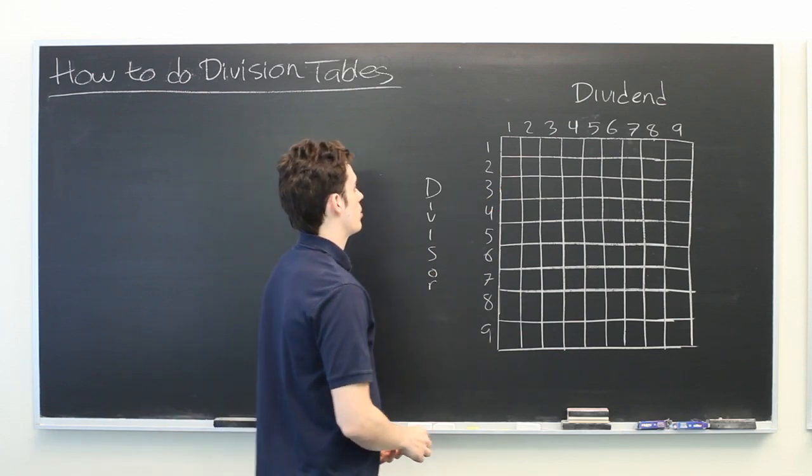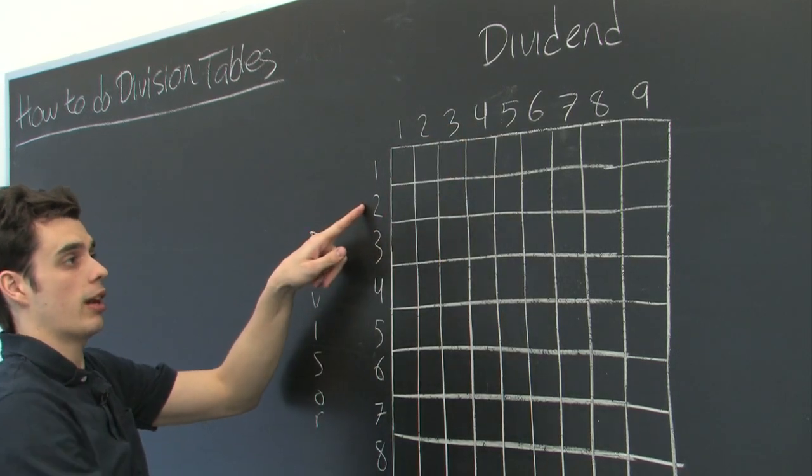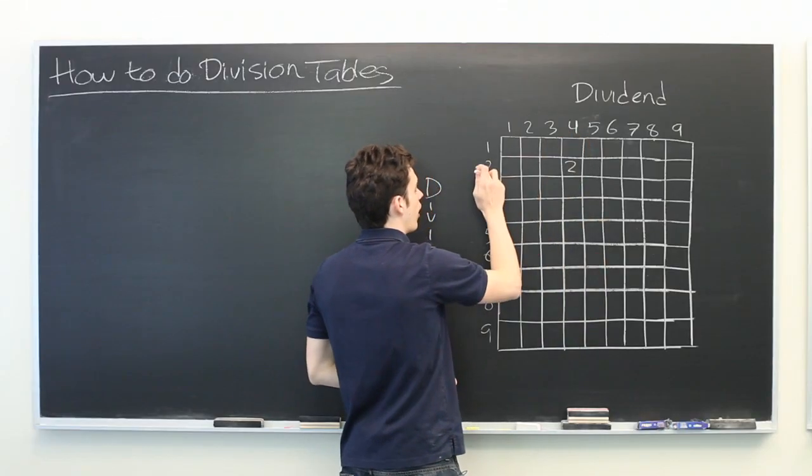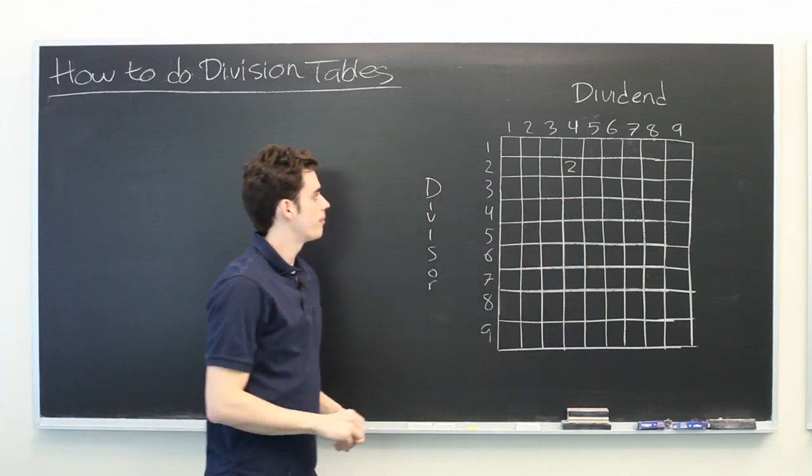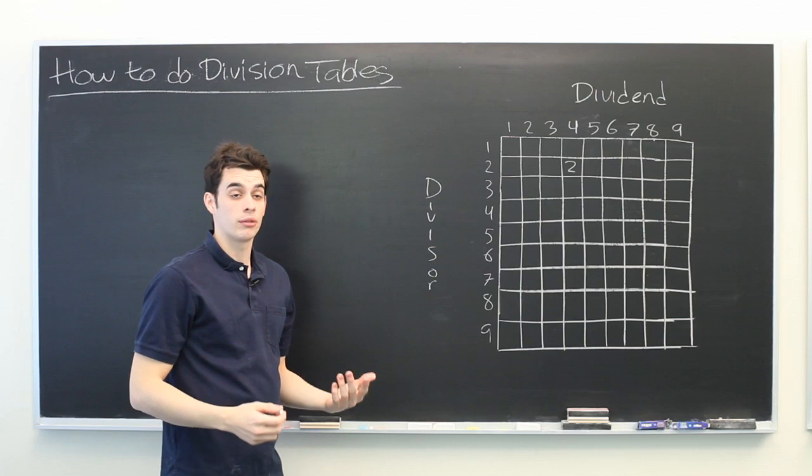So for example, if we were to do four and two, the corresponding answer would be two, because four divided by two is two. Rather than go through each one of these one by one, it is helpful to find patterns.